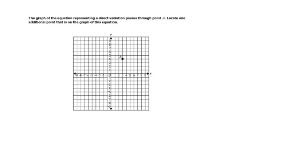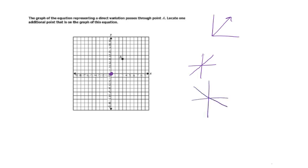The graph of an equation representing a direct variation passes through point A — locate one additional point. All direct variations go through the origin. So plot the origin as your additional point. Direct variations are lines that go through the origin; they can have positive or negative slope, but they always pass through (0, 0).